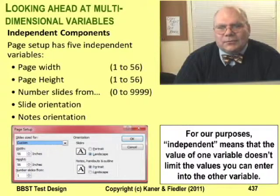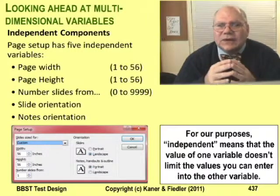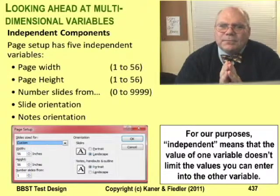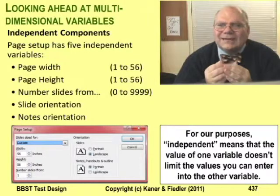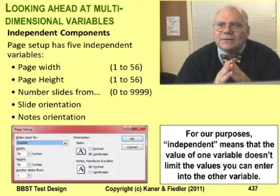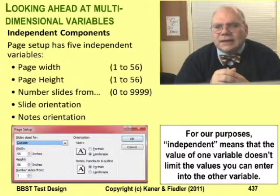When you start talking about n-tuples, you're talking about multivariable testing. Most programs work with more than one variable at a time. I like to start testing with simple tests focusing on each variable by itself, but once the program gets more stable, it's time to look at variables together — especially variables that are naturally grouped. For example, a page setup dialog isn't just about page width; it has five independent variables that together determine how the program displays or prints the slides. By 'independent' I simply mean that no value of one variable limits the values the other variables can take. Testing independent variables is much easier than testing variables that are not independent.